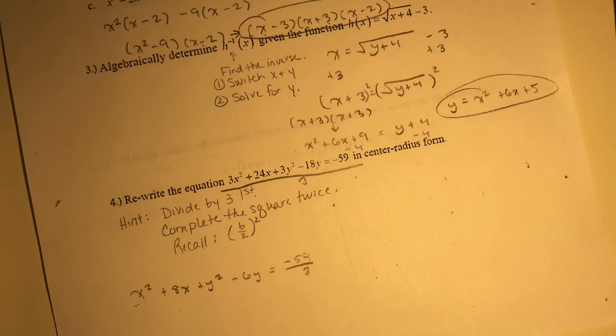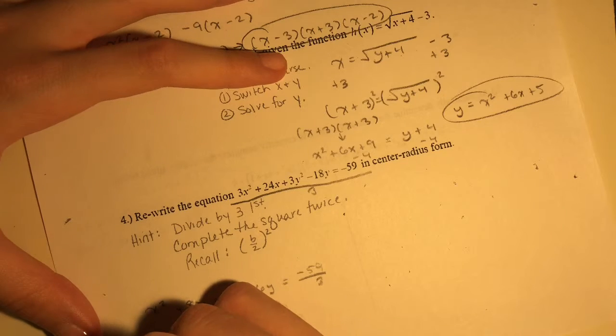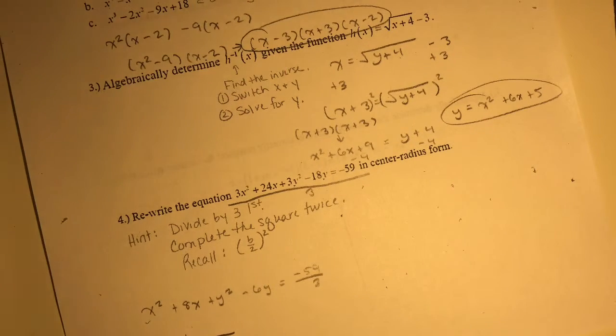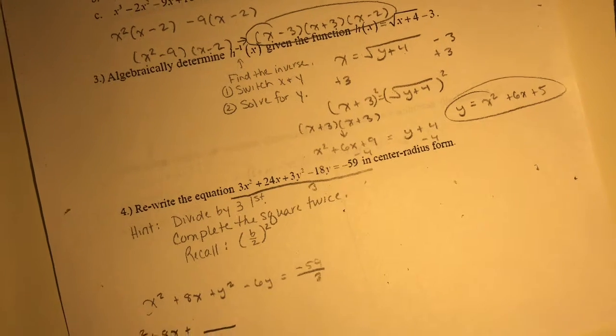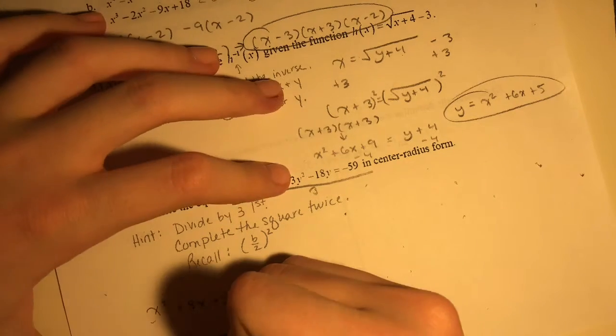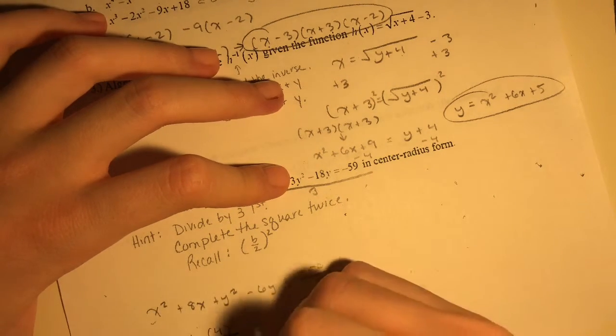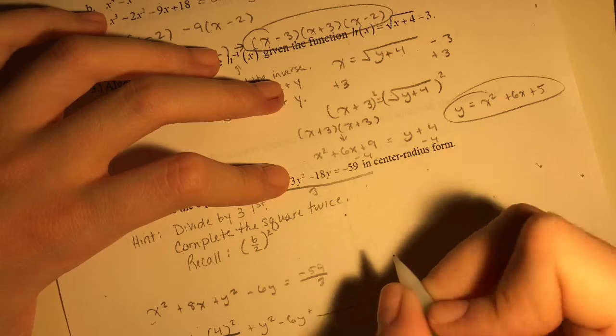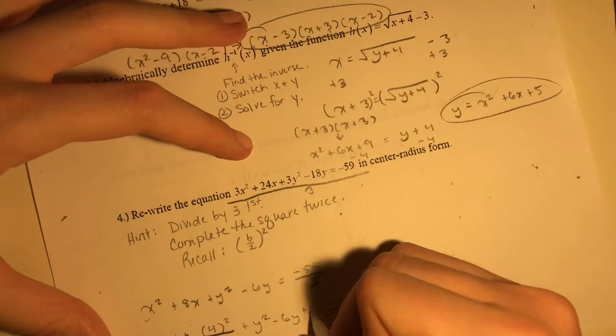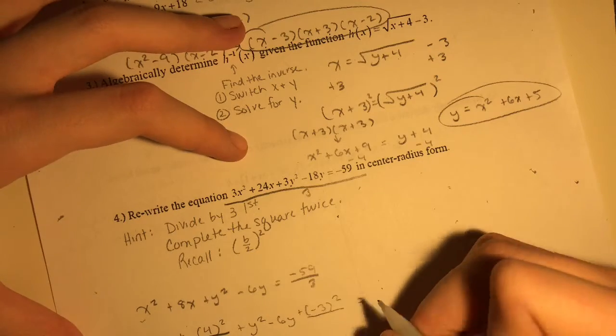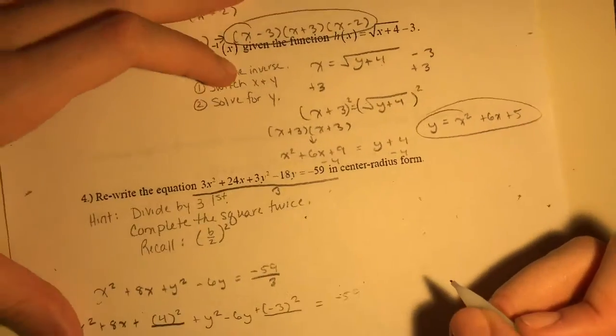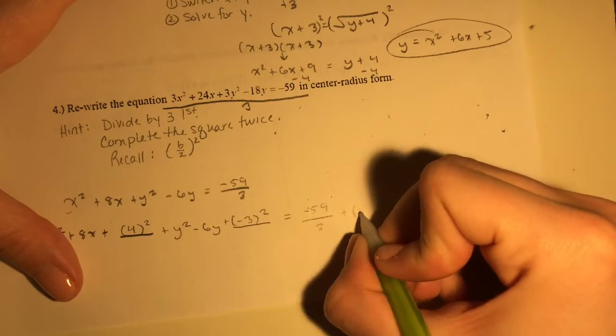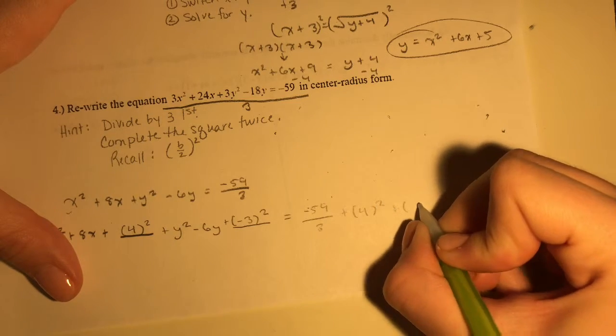Okay, so now we're gonna put our x's together. The x's are beautifully together. But the most interesting thing about this is we're gonna do the b divided by 2 squared. So b here is gonna be 8. So 8 divided by 2 squared, we get 4² plus y²-6y plus -6 divided by 2 is -3 squared. And this will equal -59 over 3 plus 4² plus (-3)².